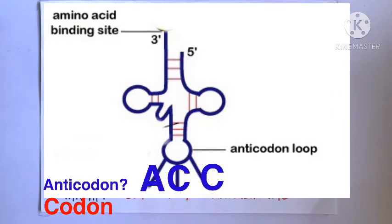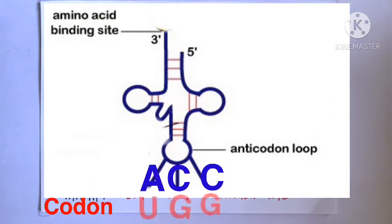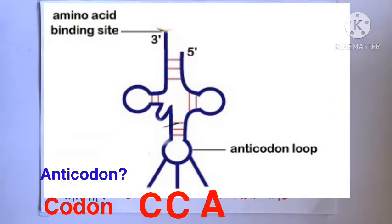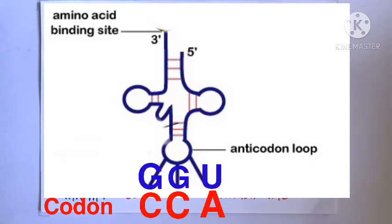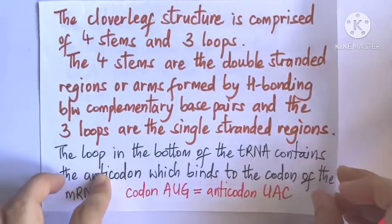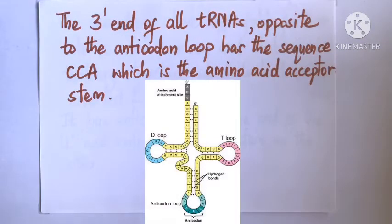Let's do one last practice. If the codon is CCA, then what is the anticodon? It will be GGU. From this, we realize that the anticodon forms the mRNA binding site in the tRNA.